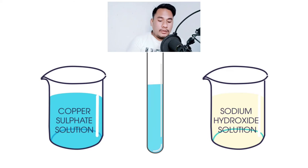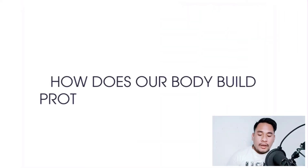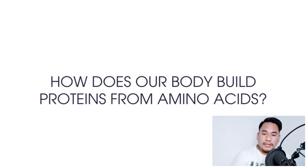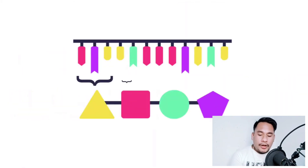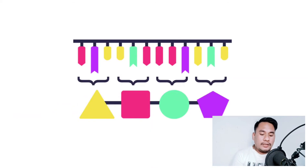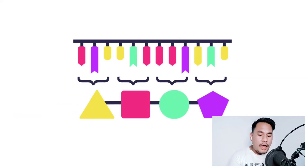How does our body build proteins from amino acids? Our DNA acts as a set of instructions on how to build proteins.